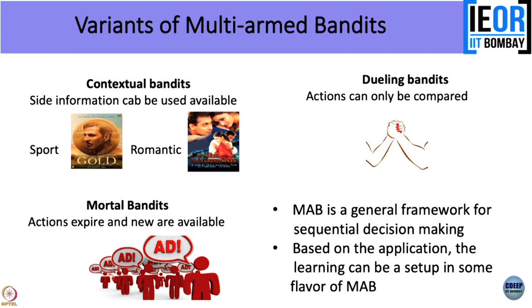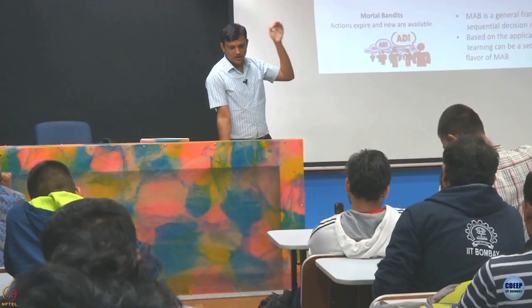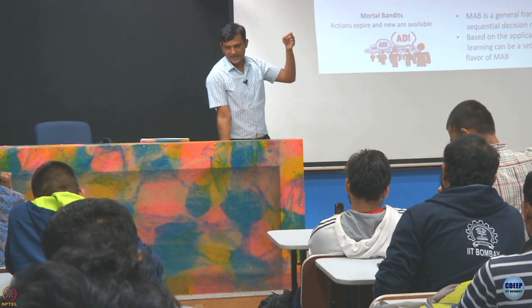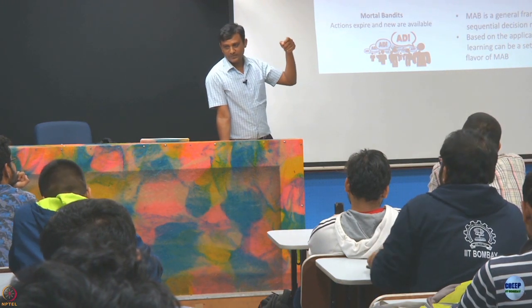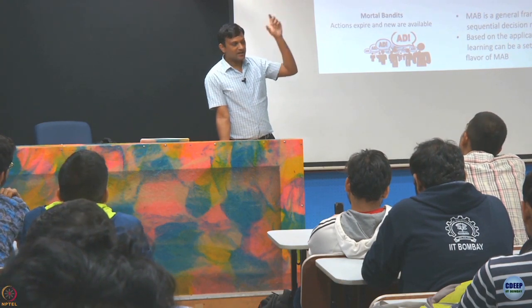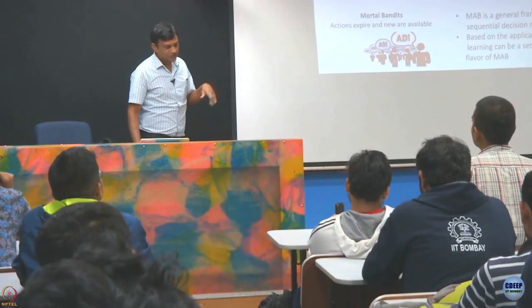We will cover the basics, but for the project I would ask you to explore different variants of bandits that have been studied. One important variant is contextual bandits, where the action is instance-specific — curated for each context. For example, when placing an ad you know the visitor is a young person, so you might show a sports shoe ad rather than an insurance ad. The context here is the user's profile.